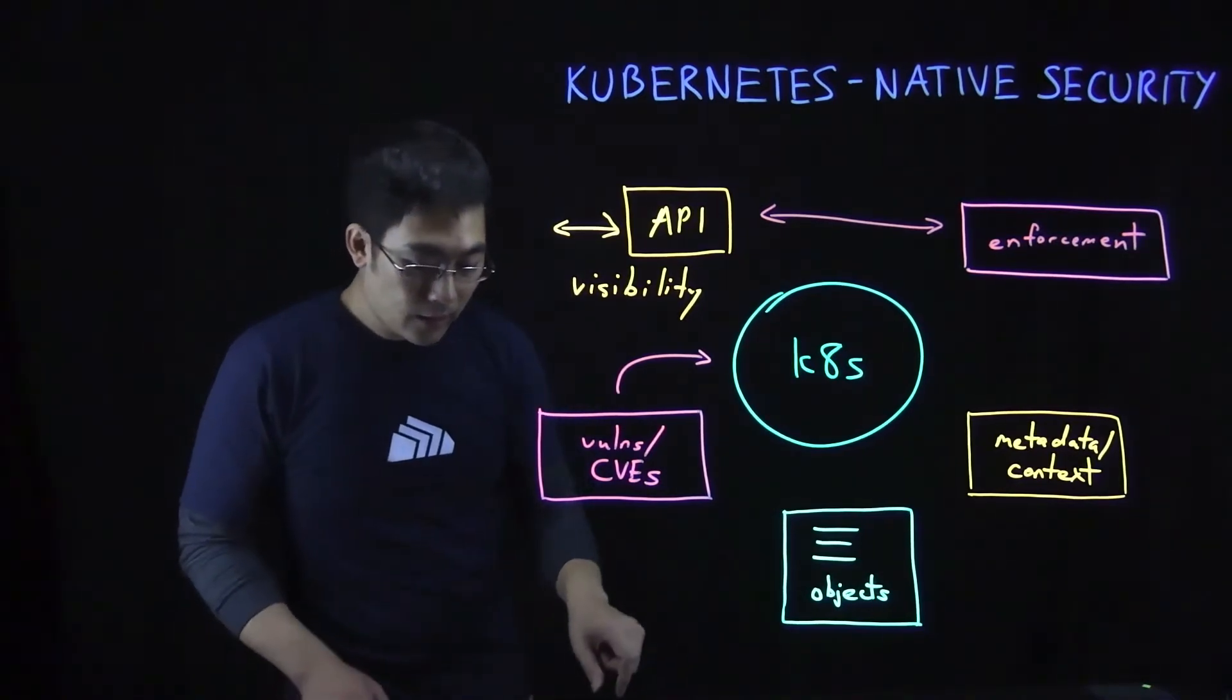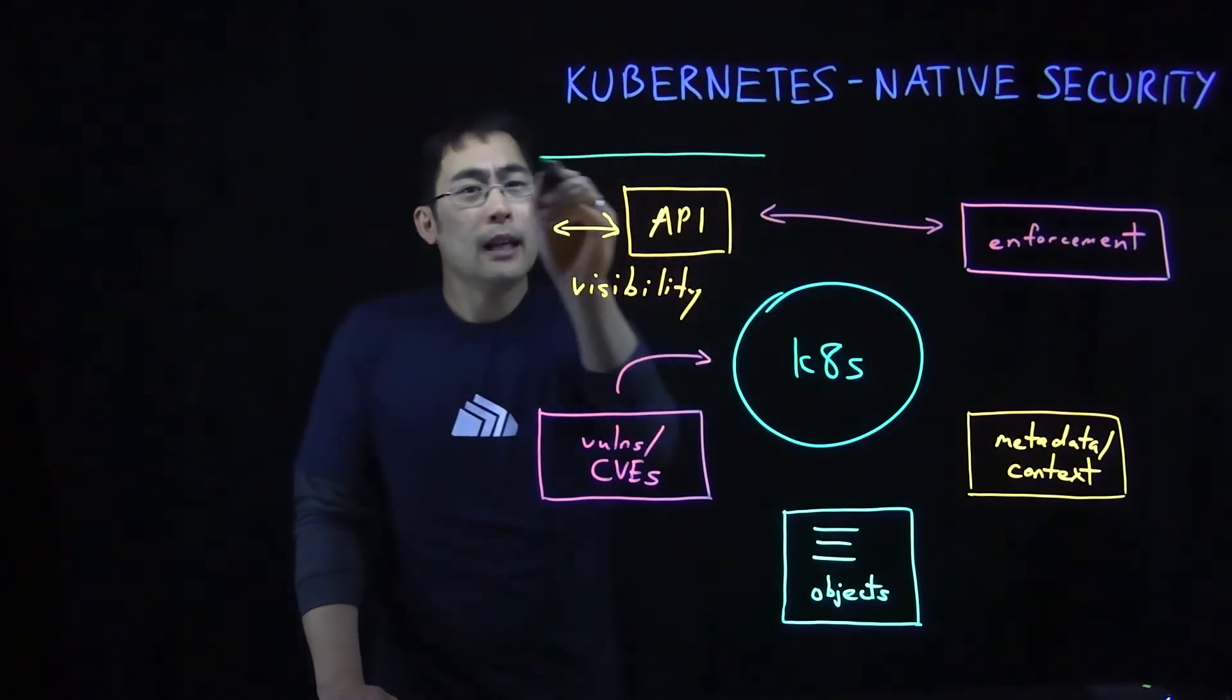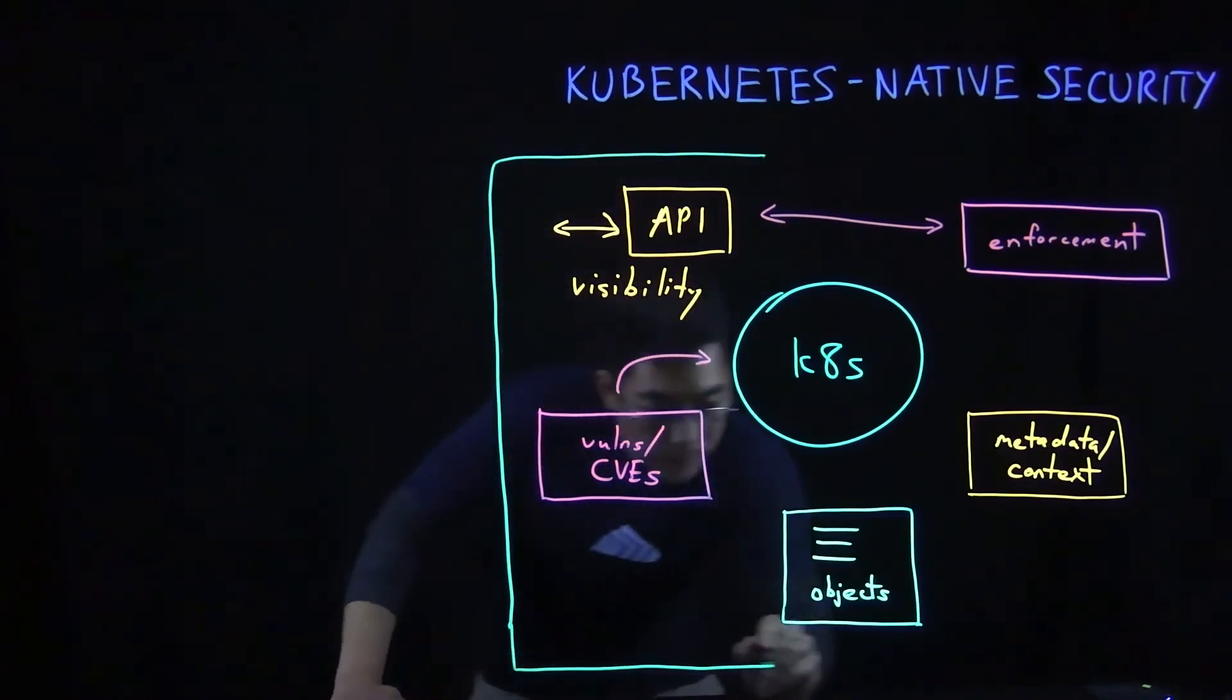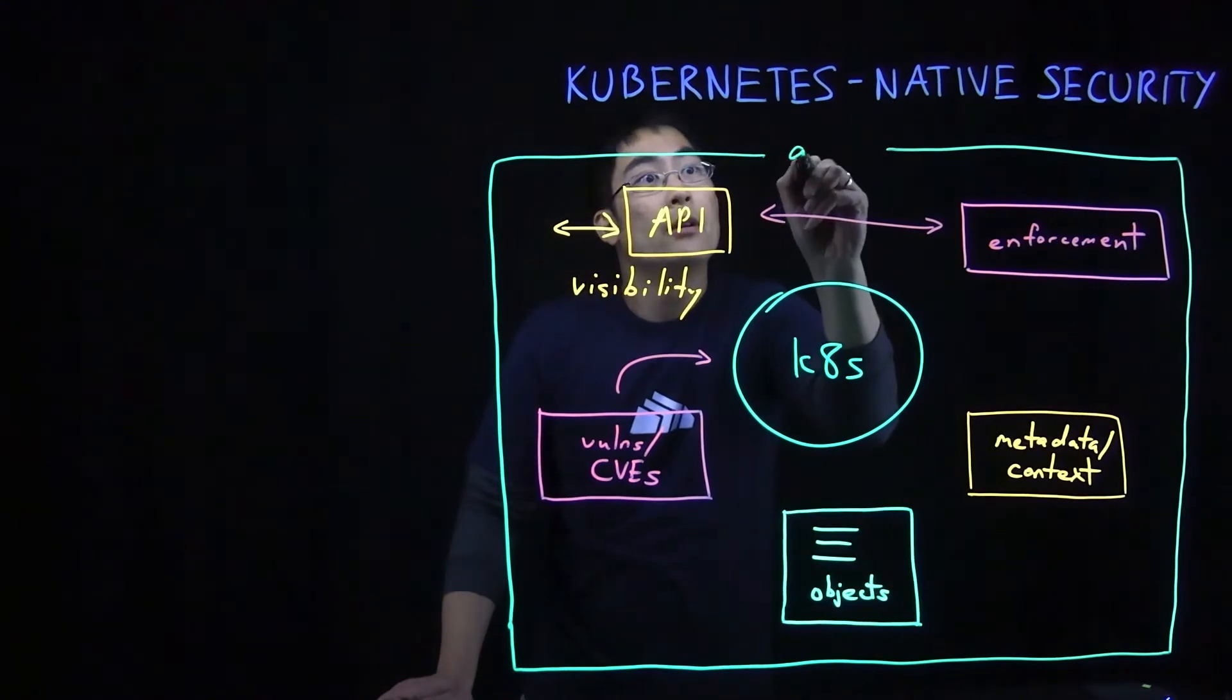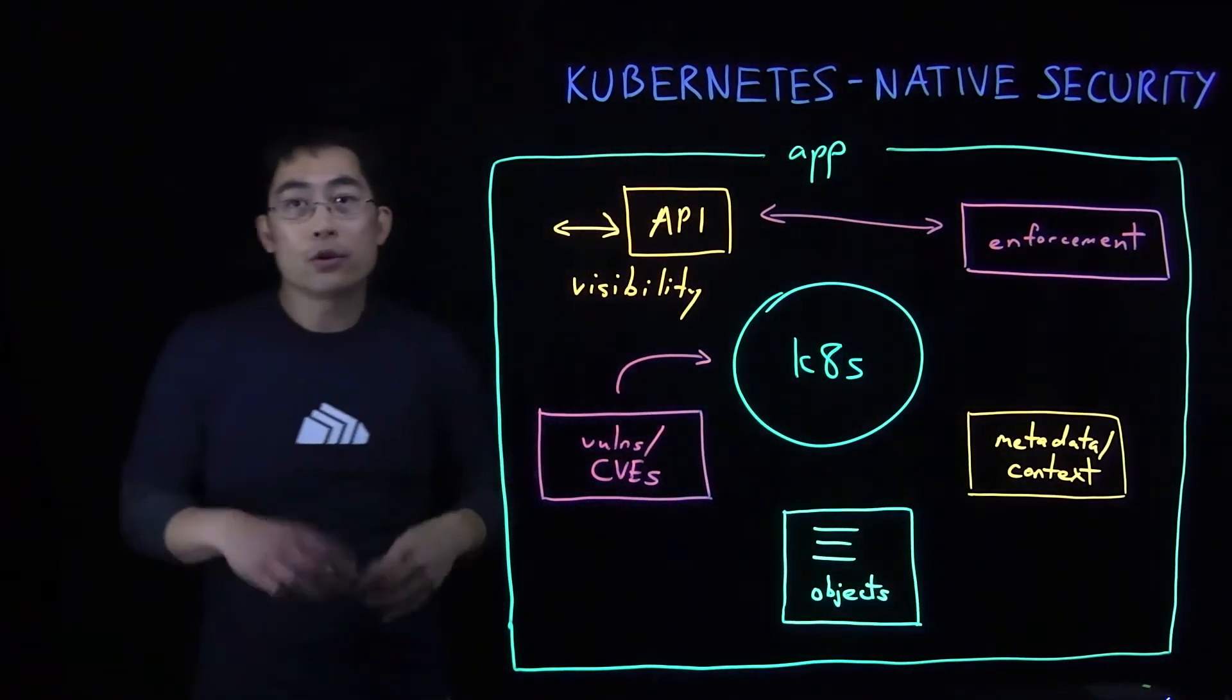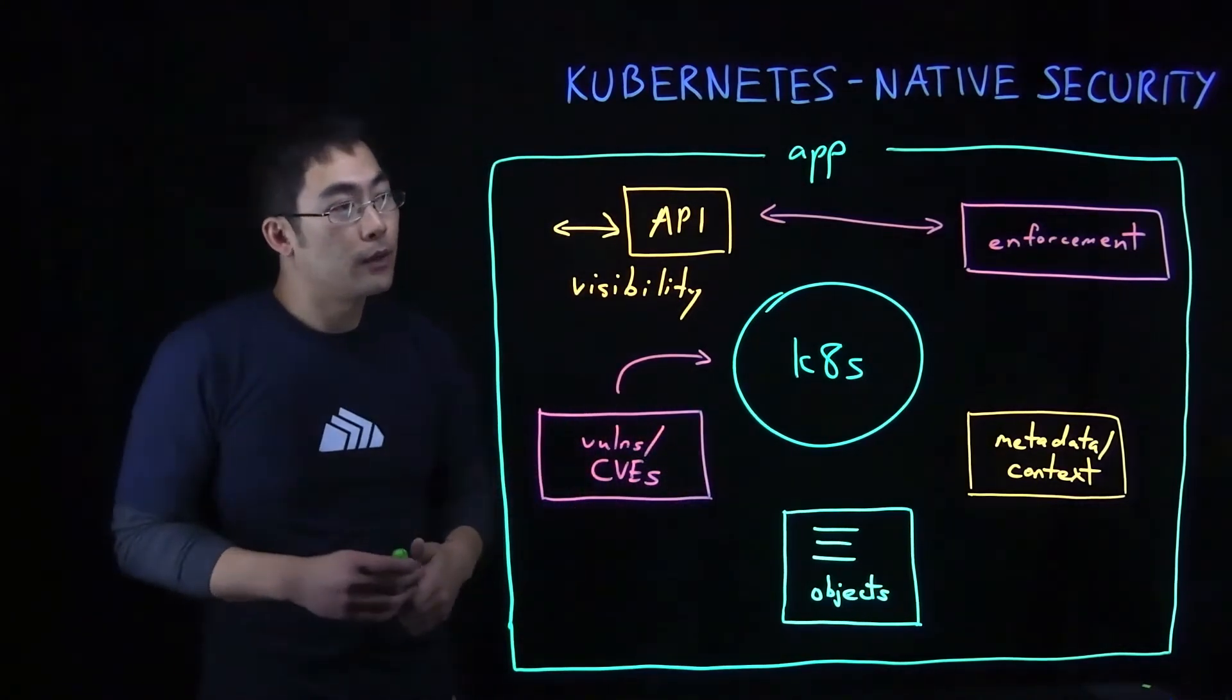Finally, the sixth aspect of what we consider to be a Kubernetes native security solution is that it has to deploy and run as a Kubernetes application itself. This includes support for integrations with cloud native tool chains. This allows you to streamline your operations, your workflows, your tooling across the entire cloud native software lifecycle.